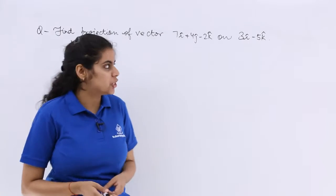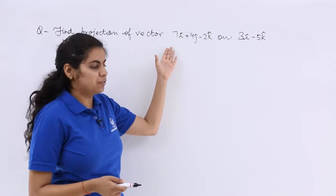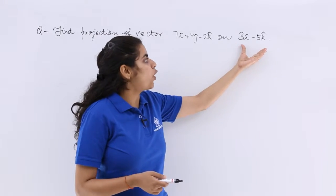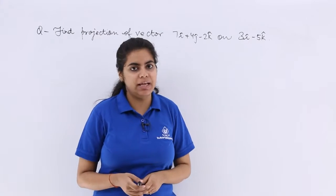This question is based on projection. It says find the projection of vector 7i cap plus 4j cap minus 2k cap on 3i cap minus 5k cap.